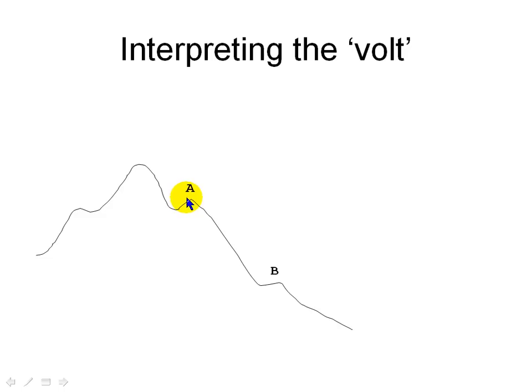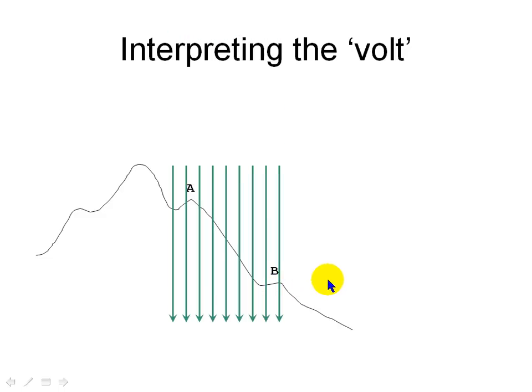Consider this terrain with two points A and B. They are in the middle of an electric field, like so. Obviously, we say A is higher than B in that electric field. We don't measure how much higher A is than B in meters.